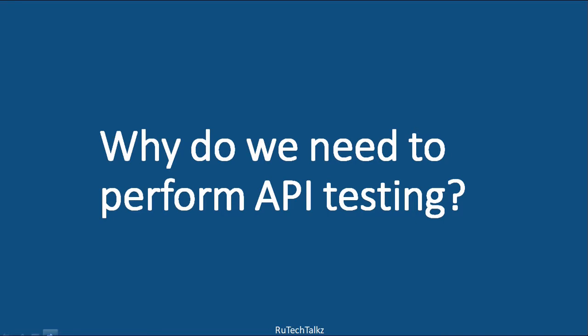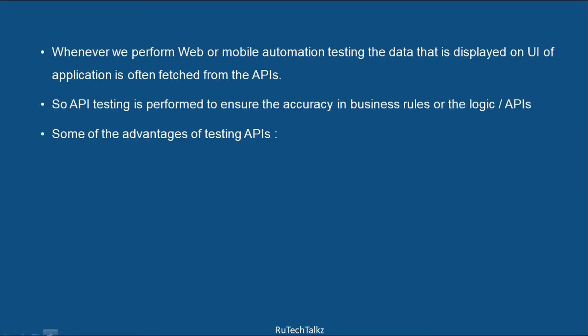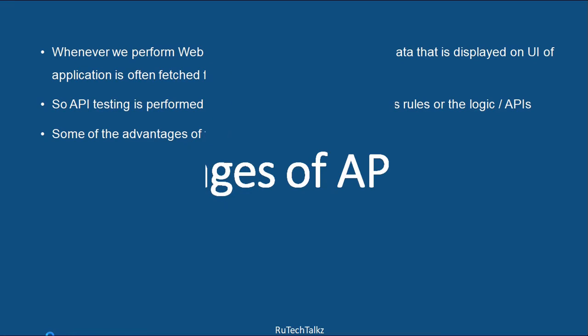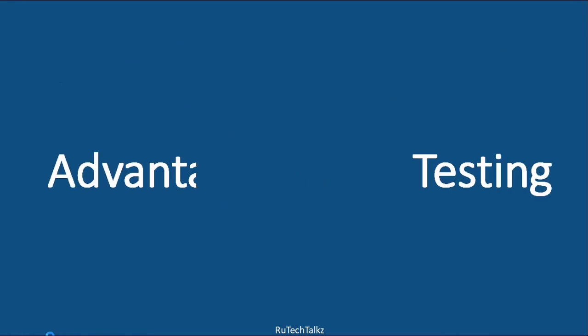Why do we need to perform API testing? Whenever we perform web or mobile automation testing, the data displayed on the UI of the application is often fetched from the API. So API testing is performed to ensure accuracy in business rules, logic, and the APIs.